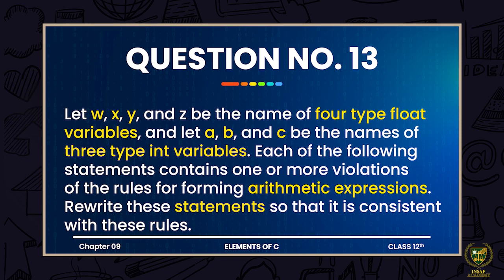Question 13 states: Let w, x, y, and z be the names of four float variables, and let a, b, c be the names of three integer type variables. Each of the following statements contains one or more violations of the rules for forming arithmetic expressions. Rewrite these expressions so that those violations are removed.